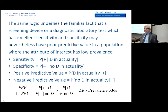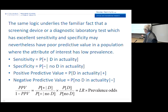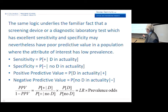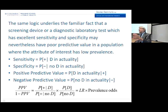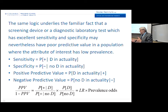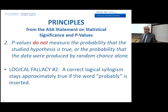If this is a well-known phenomenon in clinical practice in the realm of screening or diagnostic testing, why are we so willing to fall into the logical trap when we get a p-value less than 0.05?